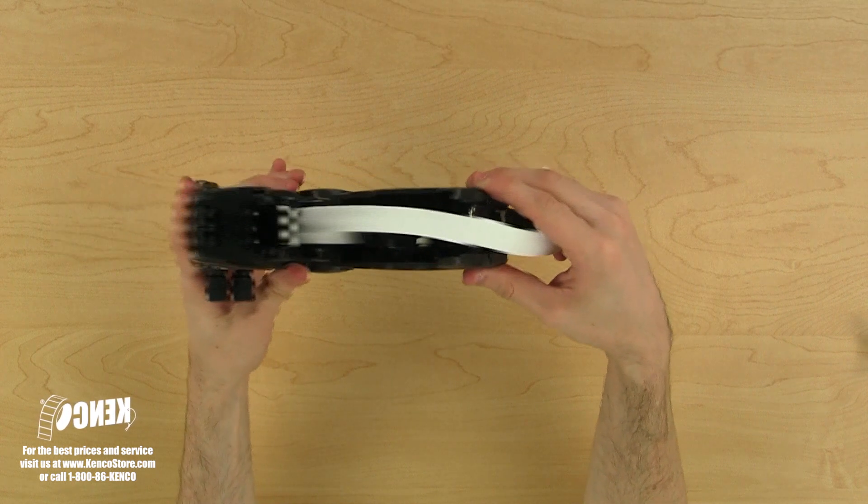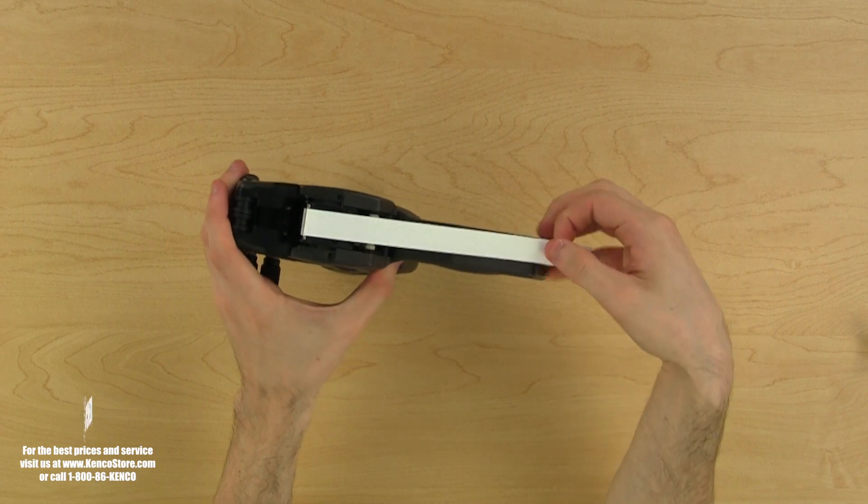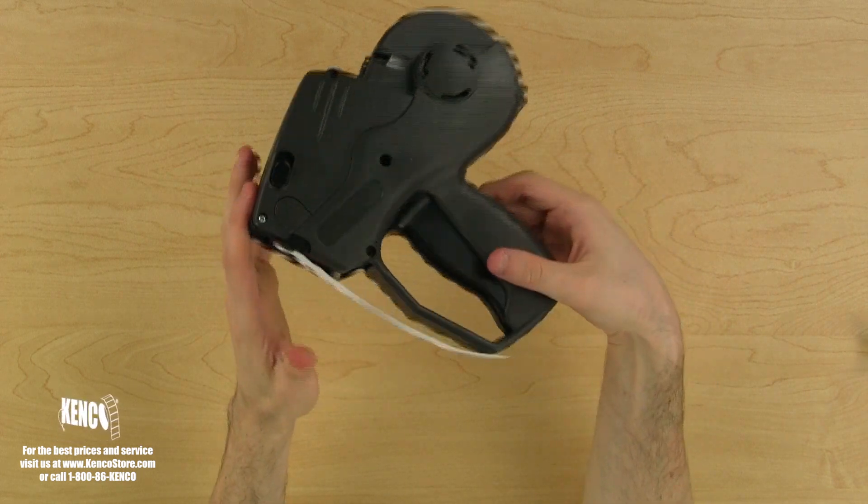Let's pull the labels out of the gun and over the silver roller about six to eight inches. Then we can close the label housing cover.